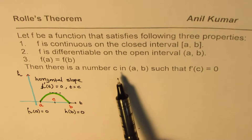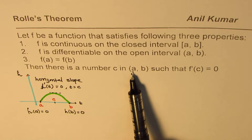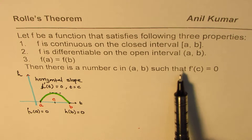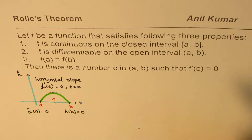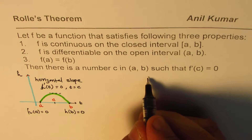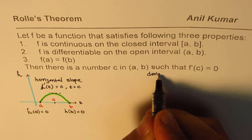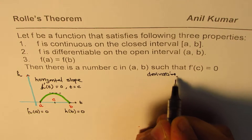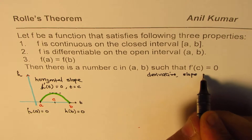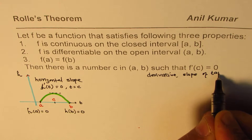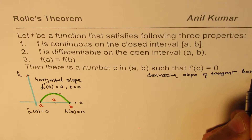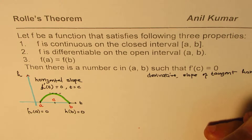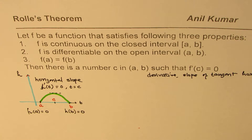Then there is a number c in the open interval (a, b) such that f'(c) = 0. f'(c) basically means the derivative, which represents the slope of the tangent. When the slope is 0, that means the tangent is horizontal.